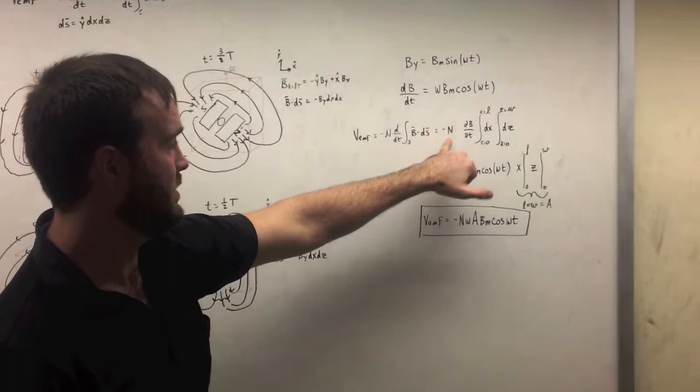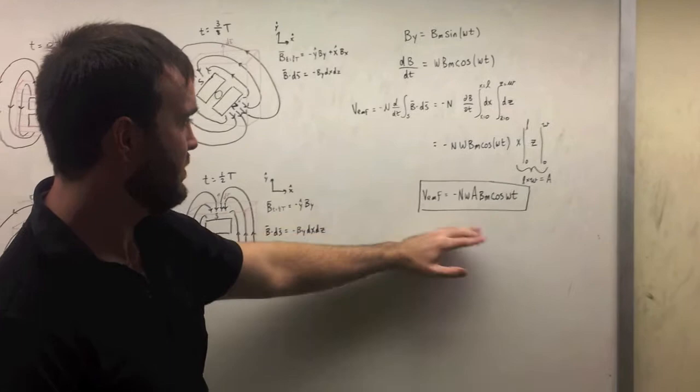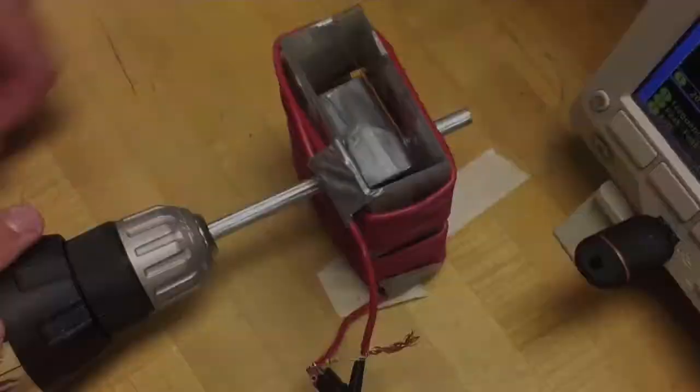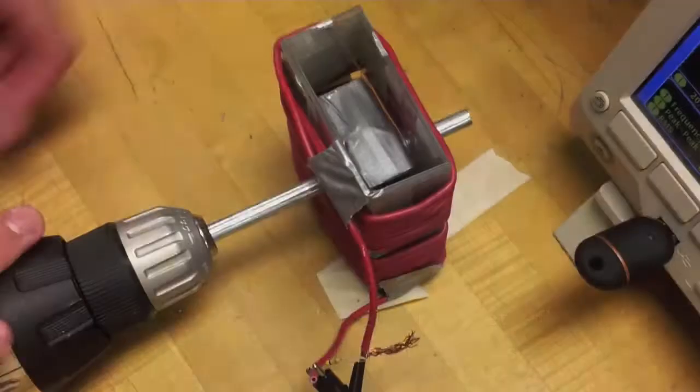If you plug this into the equation, you've got the voltage induced equals the number of turns times the dB dt times the area of the loop. And what you have is the number of turns times omega times the area of the loop times a cosinusoidal function.